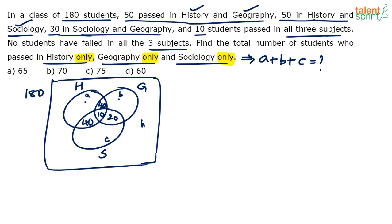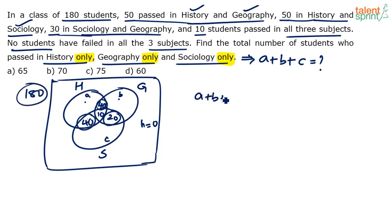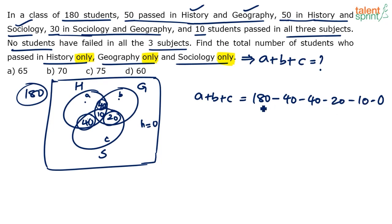So History and Geography only = 40, History and Sociology only = 40, Geography and Sociology only = 20, and all three = 10. H = 0 because no students failed all three subjects. Now A+B+C = 180 minus all other values = 180 − 40 − 40 − 20 − 10 − 0 = 180 − 110 = 70. So the answer is 70, which is option B.